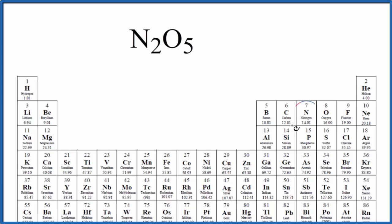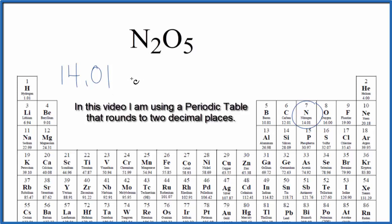So on the periodic table, we find nitrogen, which is 14.01 grams per mole. I won't write grams per mole now. Let's do that at the end.